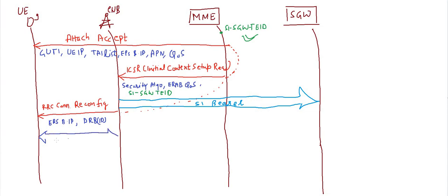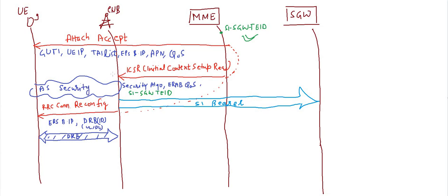This is the radio part — the interface between UE and eNodeB. TEIDs don't work here; we use DRBs instead. Both uplink and downlink DRBs are shared here, so the Data Radio Bearer is established. One more important thing: before RRC Connection Reconfiguration, access stratum security also takes place. A separate lecture can be made on that topic if needed.